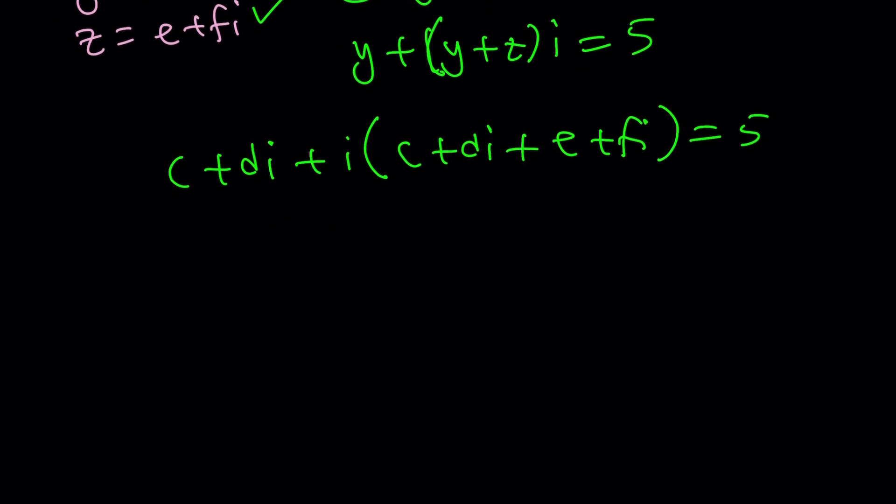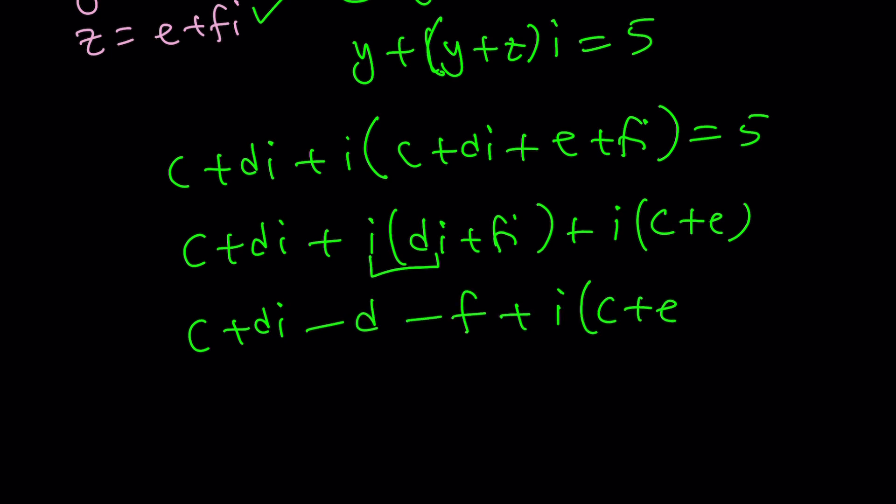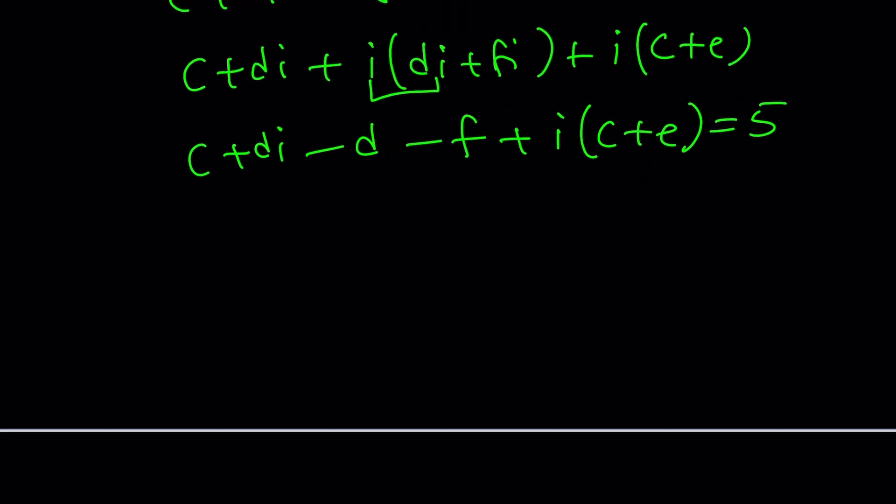When you distribute this, you should be getting something like this. i times di plus fi plus i times c plus e. And then you're going to get c plus di, and then there's a plus sign, but this will become a minus sign because i squared is negative 1, so it's going to be minus d minus f, plus i times c plus e, and the whole thing is equal to 5. Awesome.